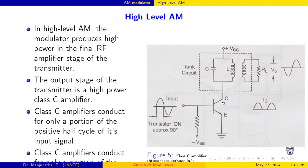Here is the Class C amplifier using an NPN transistor. A sinusoidal input signal is given at the base, and the VBE junction is a PN junction. At the collector there is a tuned circuit — a tank circuit — tuned to the carrier signal frequency. L and C form the tank circuit, VCC is connected through this tank circuit, and the same signal is coupled to the load, which is typically an antenna.